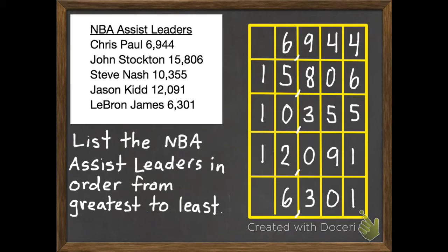I'm going to start with my greatest place value spot, the 10,000s, and three of them have the 1 in the 10,000 spot. So those are going to be our three greatest. The other two haven't made it to 10,000 yet. Since all of them have the same digit, we need to move on to our 1,000s place. We have a 5, 0, and 2. 5 is the greatest, which means that John Stockton will be the greatest. So I'm going to put a number 1 next to his name.